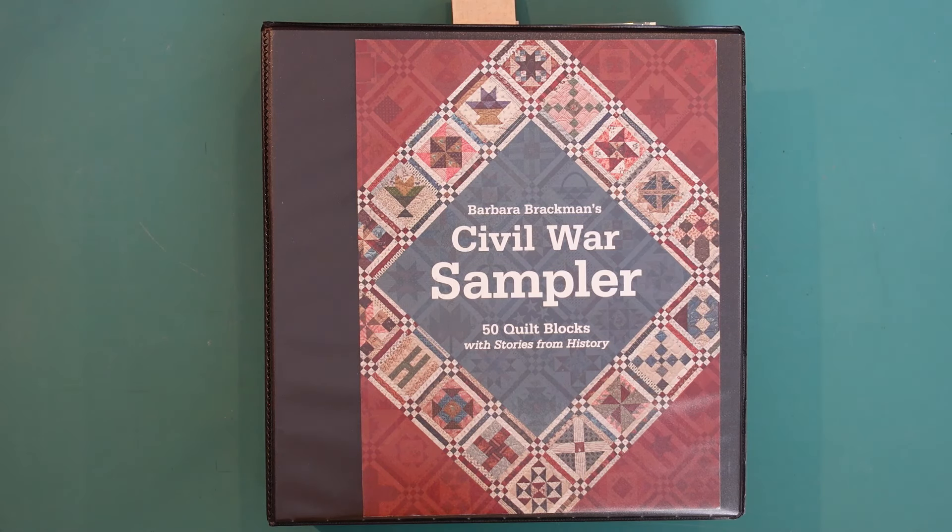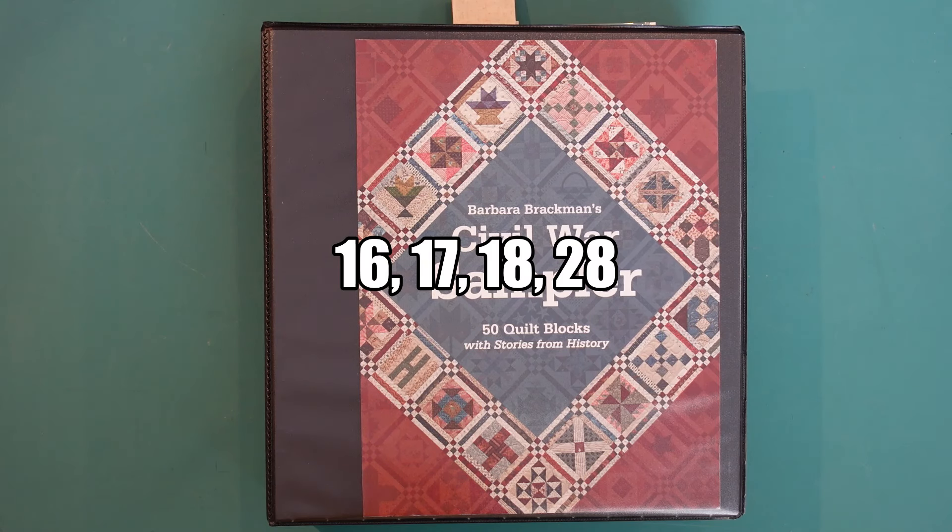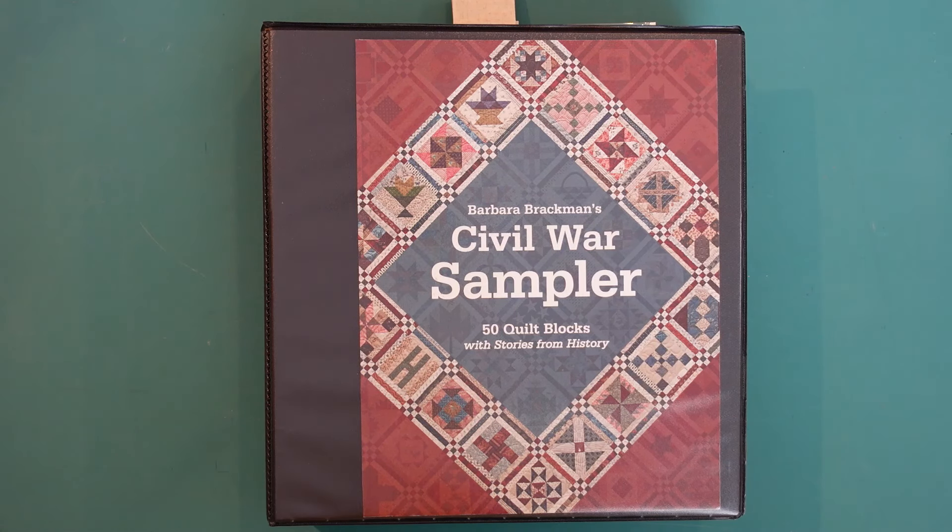It's time for the November blocks for our Civil War sampler. This month we're going to be doing blocks 16, 17, 18, and 28. If you've been a little frustrated or feeling overwhelmed by the blocks we've been making and the detail involved in them, you're going to be very happy to know that November is pretty much the easiest blocks in the entire quilt. Let's get started with block number 28.